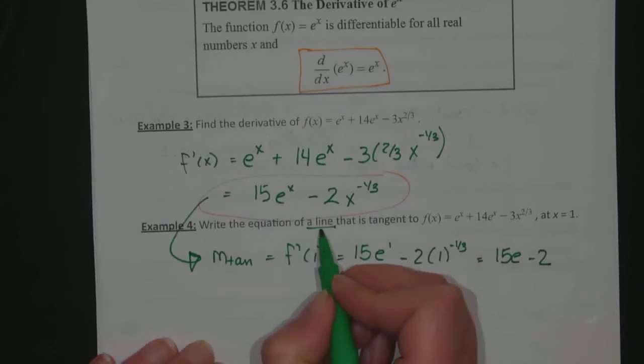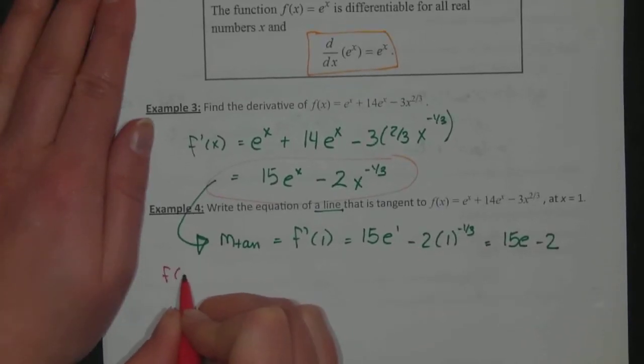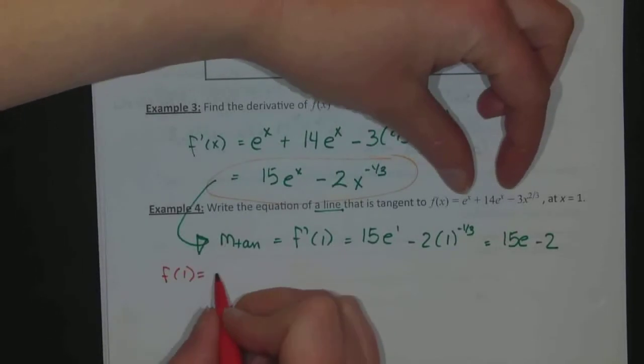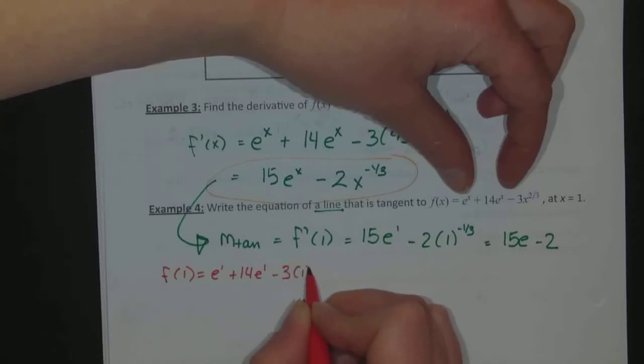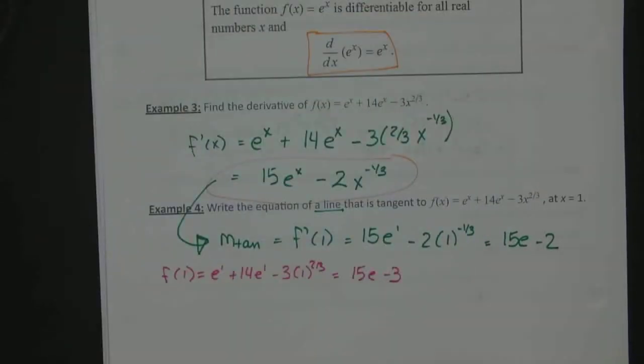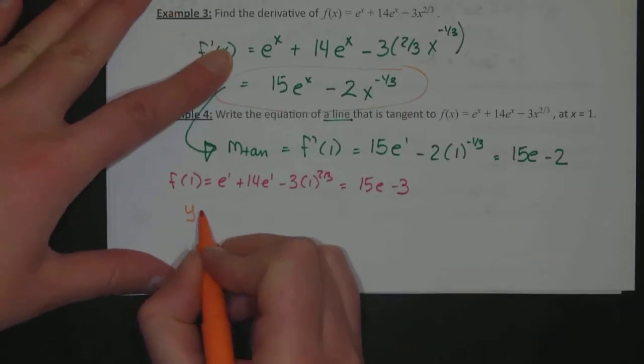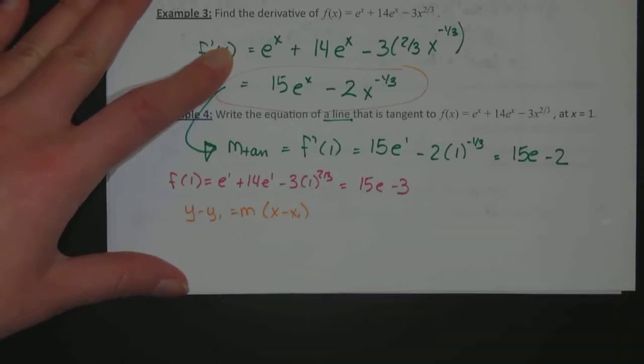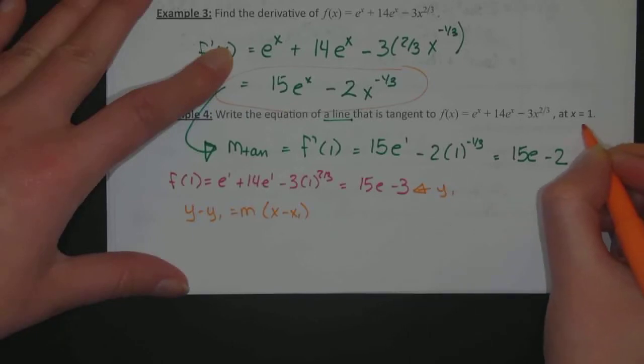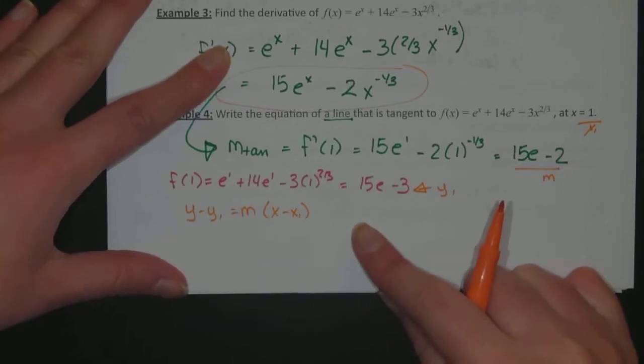To write the equation of a line, I need an ordered pair and a slope. I just have an x value, so I better use the original function to find the y value. The original function gives me e to the 1 plus 14e to the 1 minus 3 times 1 to the 2 thirds. That's 15e minus 3. Remember to find slope, we can use y minus y1 equals m times x minus x1. I now have values for y1, x1, and m. I can plug those in and I can find the equation of the line.